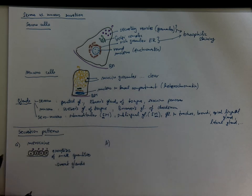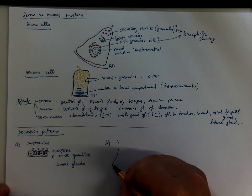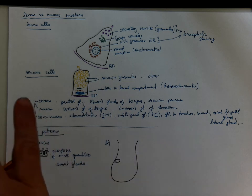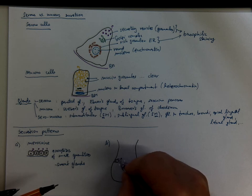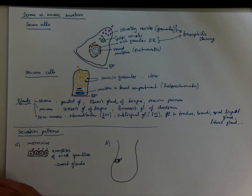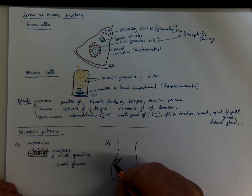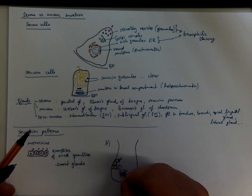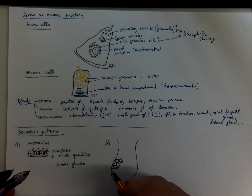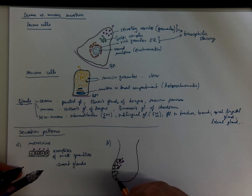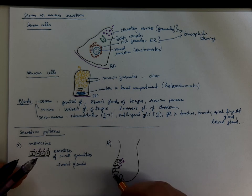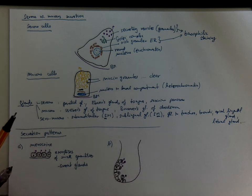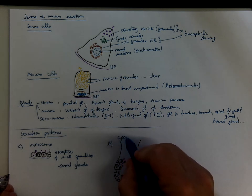Another pattern is that the cells are accumulating part of the secretion in the apical domain. And then they are releasing it together with part of the cell membrane and also part of the cytoplasm. Therefore you can find tall cells still accumulating the secretion and short cells that have just released it. So this secretion pattern is called apocrine.